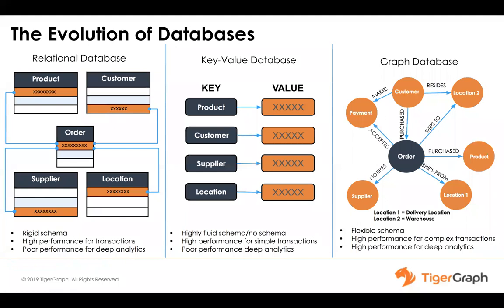The very basic analytics have performance challenges in the NoSQL world. On the right-hand side, we have flexible schema graph databases with high performance for complex transactions and high performance for deep analytics. This is the basic difference of why graph technology has been catching up lately, especially with the advent of technologies like TigerGraph.